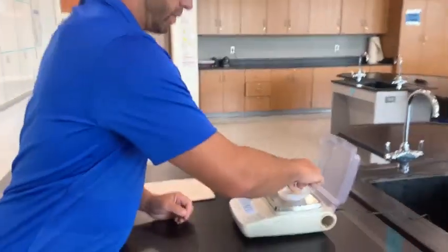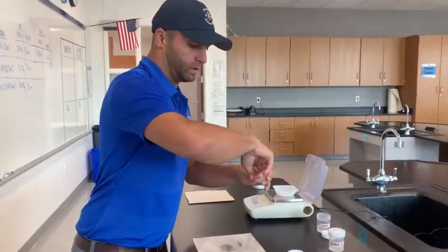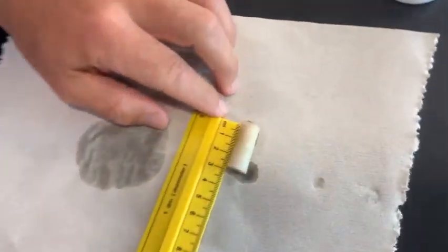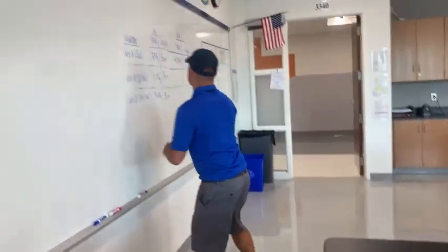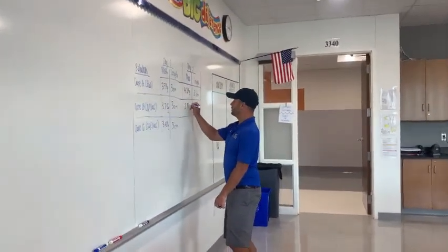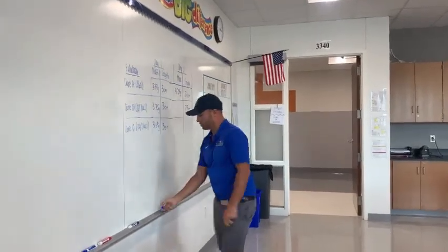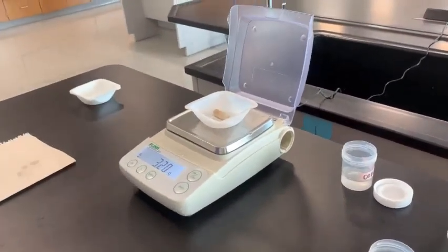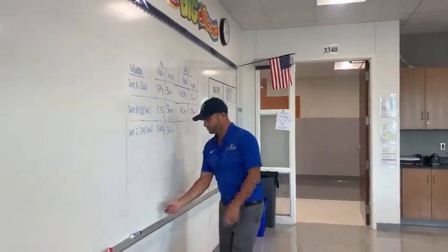Now core sample B — this is the 10% salt water. Lay it on the paper towel and measure. This one looks like about 2.8 centimeters. Recording 2.8 centimeters. Now mass — zero the scale. This weighs 3.2 grams. It's a loss of mass. Recording 3.2 grams.